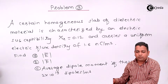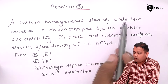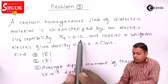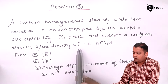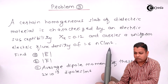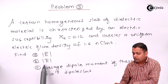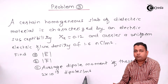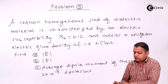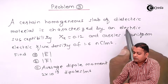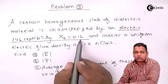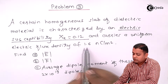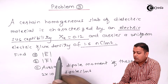Here we have the problem statement. A certain homogeneous slab of dielectric material is characterized by an electric susceptibility of 0.12 and carries a uniform electric flux density of 1.6 nanocoulomb per meter square. We are asked to find |E̅|, |P̅|, and in part C, the average dipole moment if there are 2×10¹⁹ dipoles per meter cube. The given data: electric susceptibility χ = 0.12, and D = 1.6 nC/m².